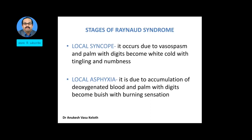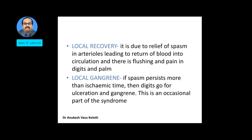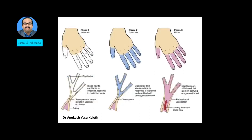Local asphyxia occurs due to the accumulation of deoxygenated blood, and the palm with digits appear bluish with a burning sensation. The third stage, local recovery, occurs due to relief of spasm in the arterioles, resulting in return of blood into circulation, so there is flushing and pain in the digits and palm. If the vasospasm persists, the affected part progresses to local gangrene — if the spasm persists beyond the ischemic time, the digits go on to ulceration and gangrene.